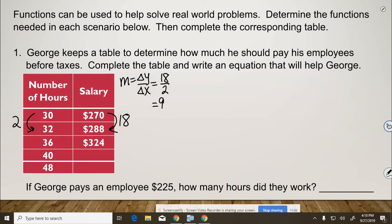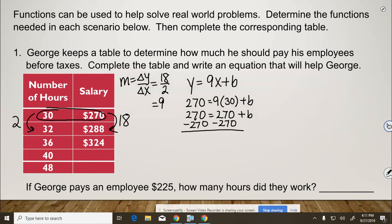So we have y equals 9x plus b. Now if we plug in one of those corresponding pairs, let's start with that 30 and 270, we can find the b value. So 270 equals 9 times 30 plus b. So 270 equals 270 plus b, because 9 times 3 is 27, keep the 0. Subtract 270, subtract 270, and b equals 0.